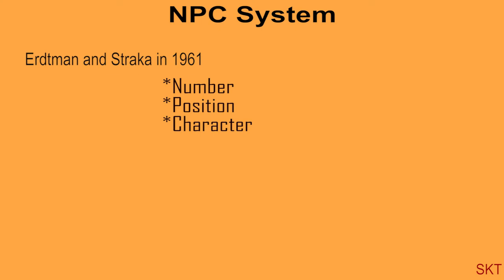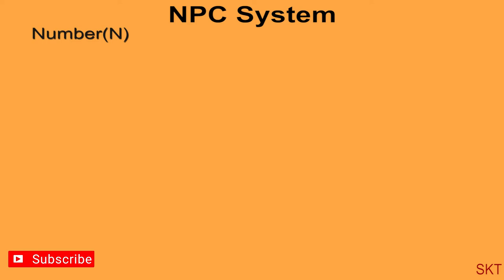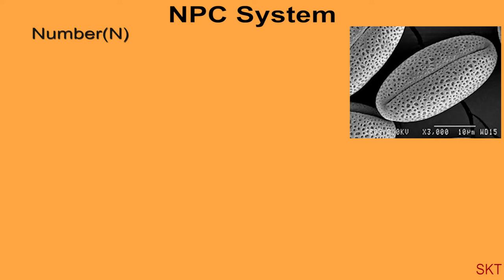Now let us study one by one. The first one, that is the number. Classification based on number, here N denotes the number. Mainly pollen having aperture is divided into seven groups mentioned as N1 to N7.